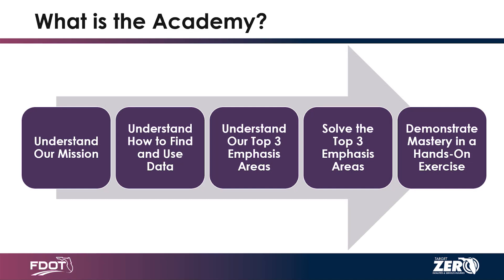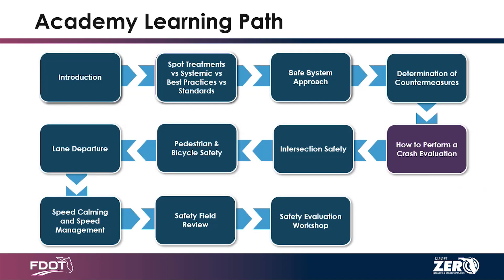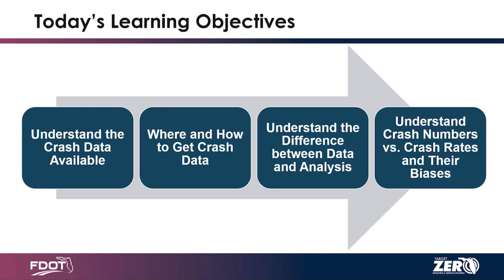As a reminder, the whole goal of this is to go through the skills necessary to get to the point where we are proficiently solving problems on our own projects. Looking at our roadmap, we've covered the introduction, spot treatments, systemic analysis, best practices, standard root cause analysis, hot spots, the safe system approach, termination of countermeasures, and the CMF clearinghouse. Today with the crash data, we're going to understand what crash data is available, where and how to get it, the difference between data and analysis, and understanding crash numbers and crash rates.